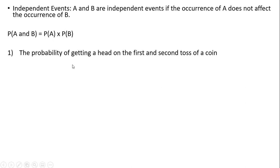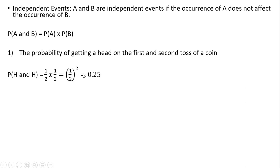For example, the probability of getting a head on the first and second toss of a coin. The probability of getting a head on the first toss is one-half. Since these are independent events, the probability of getting a head on the second toss is also one-half. So the probability of getting two heads is one-half times one-half — the probability of A times the probability of B — which is one-half squared, giving a result of 0.25, a 25% chance.